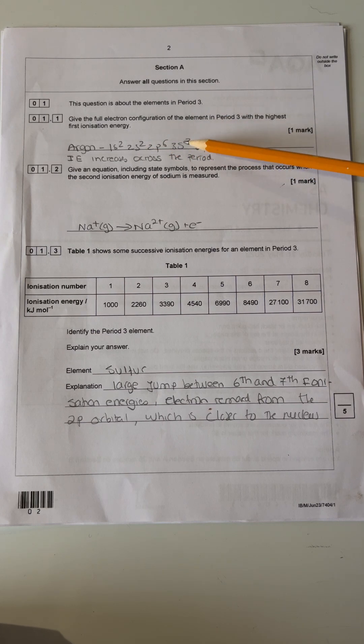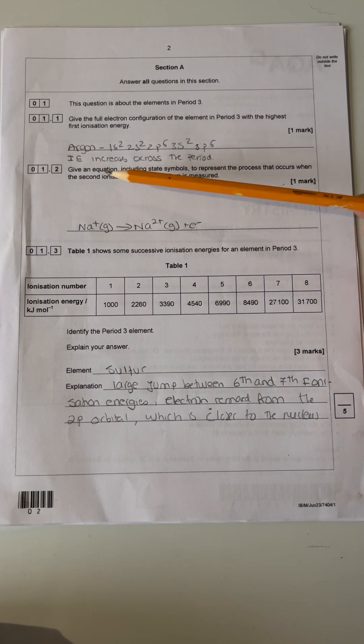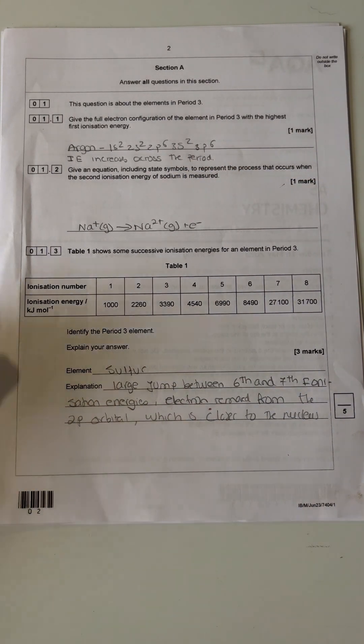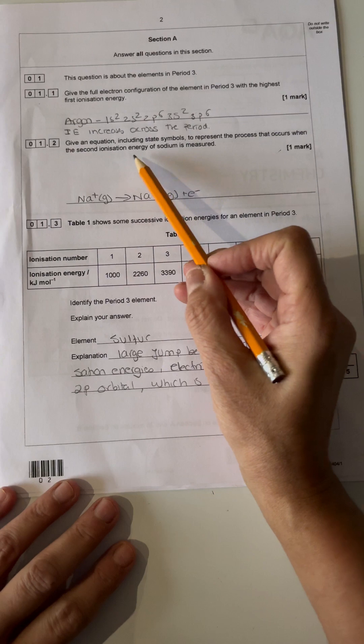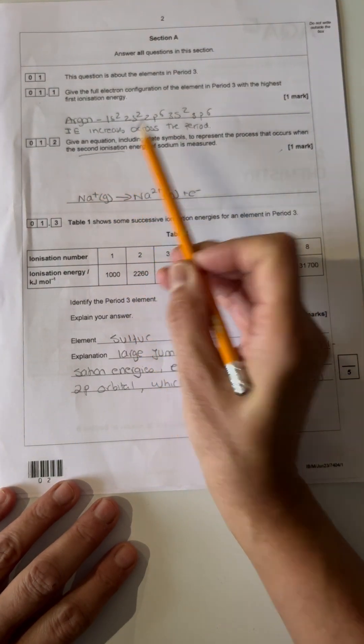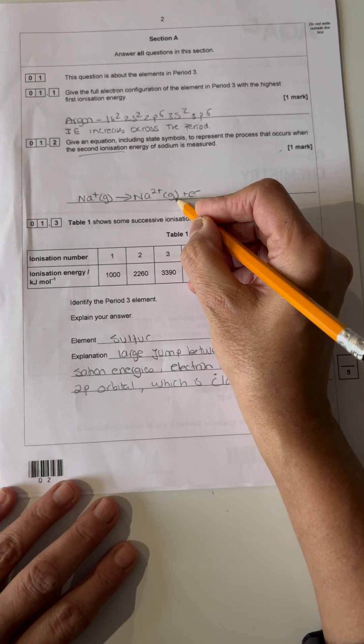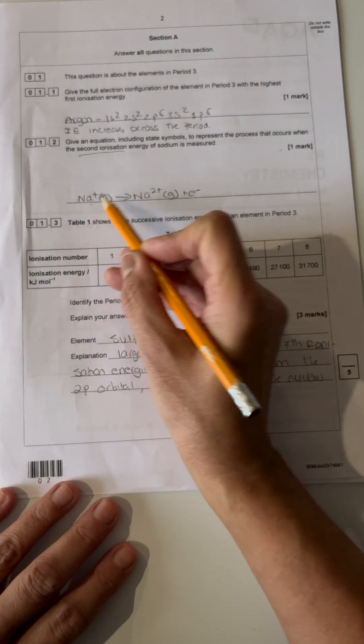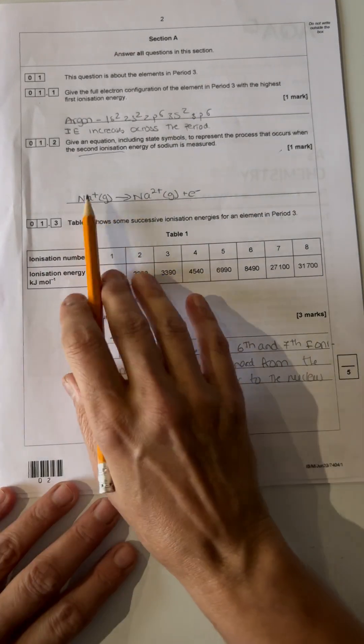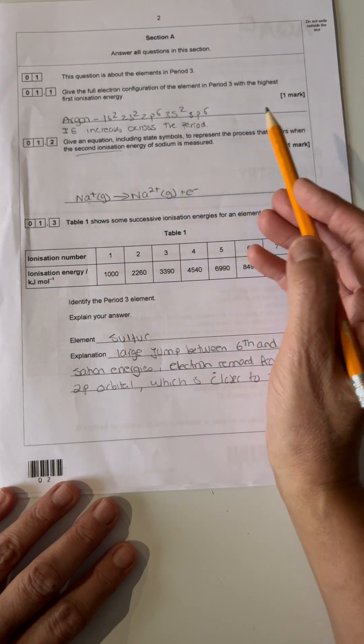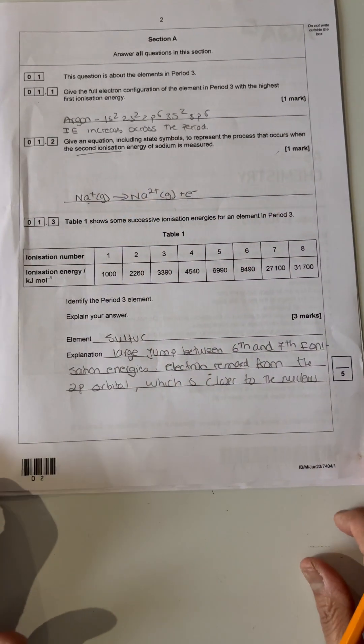Give an equation including state symbols for the process that occurs when the second ionization energy of sodium is measured. When you do ionization energy equations, if they say second, that's a sort of trick I use—if they say second, you start with two plus here, with gas. Remember you have to know the definition. Then you go to one plus plus electron. Always remember, if it was like seventh ionization energy, you put seven here and then six plus there, so you'll never get it wrong.